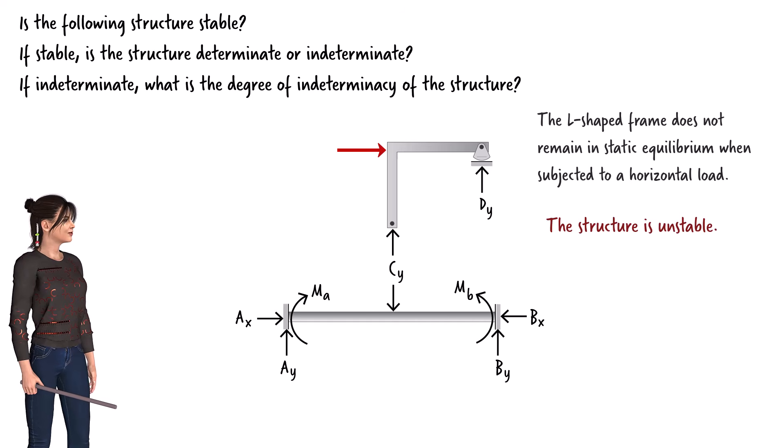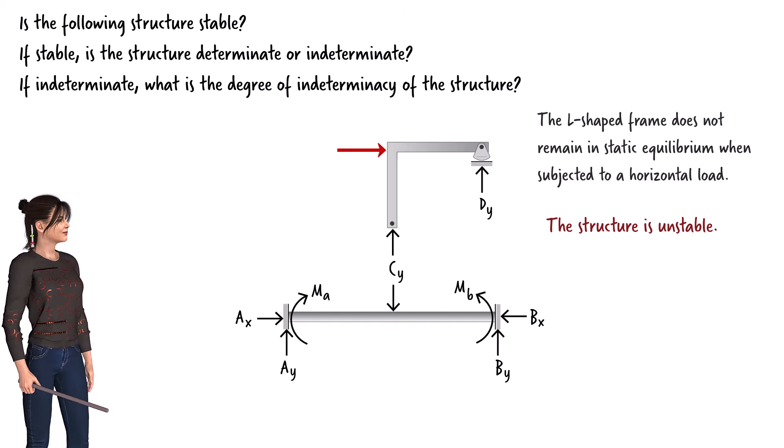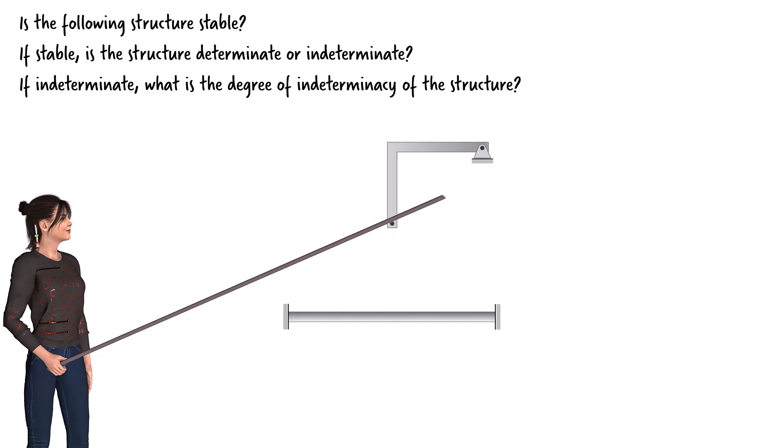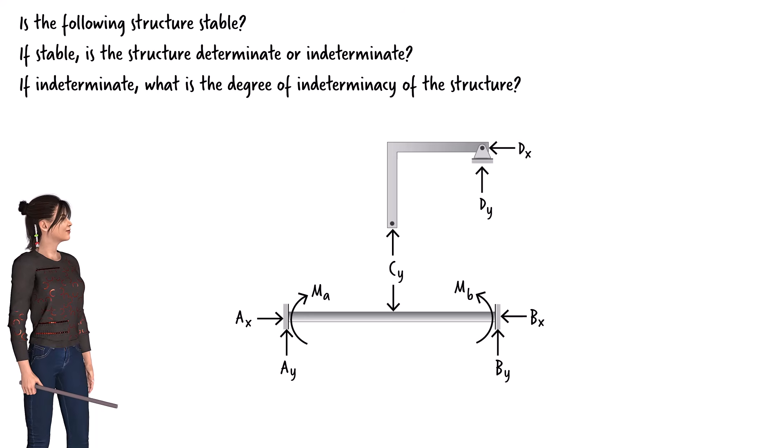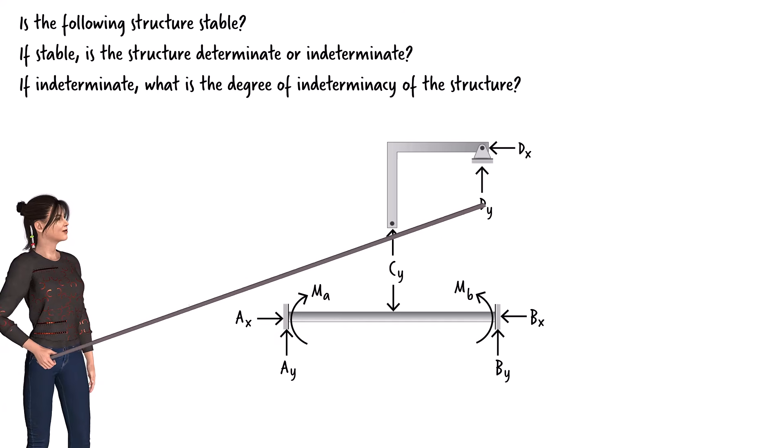Let's consider another variation of the structure. Suppose we replace the rocker with a pin support. How does that affect the stability of the system? Here is the free-body diagram of the two parts of the structure. Note that now there is a horizontal reaction force associated with the frame.